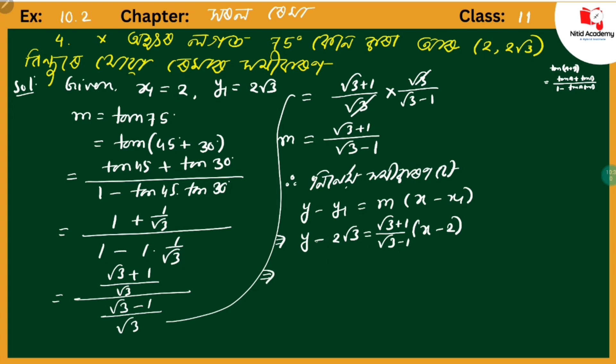Multiplying both sides by (√3 - 1): (√3 - 1)(y - 2√3) = (√3 + 1)(x - 2). We need to expand both sides.